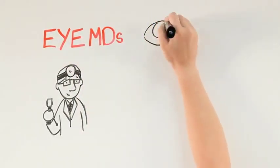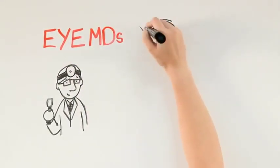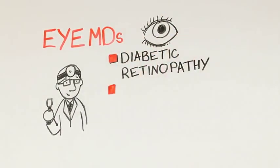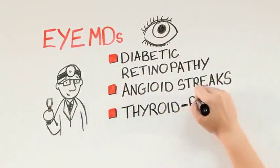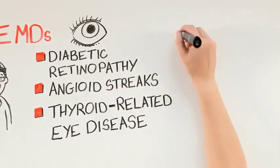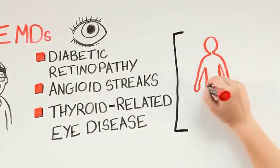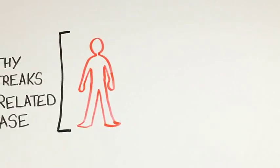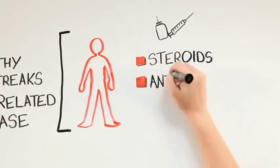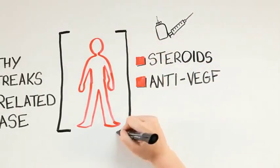Having a medical degree helps an ophthalmologist because many eye conditions like diabetic retinopathy, angioid streaks, and thyroid-related eye disease are linked to problems that affect the whole body. Additionally, we use medications like steroids and anti-VEGF treatments that can affect the rest of the body.